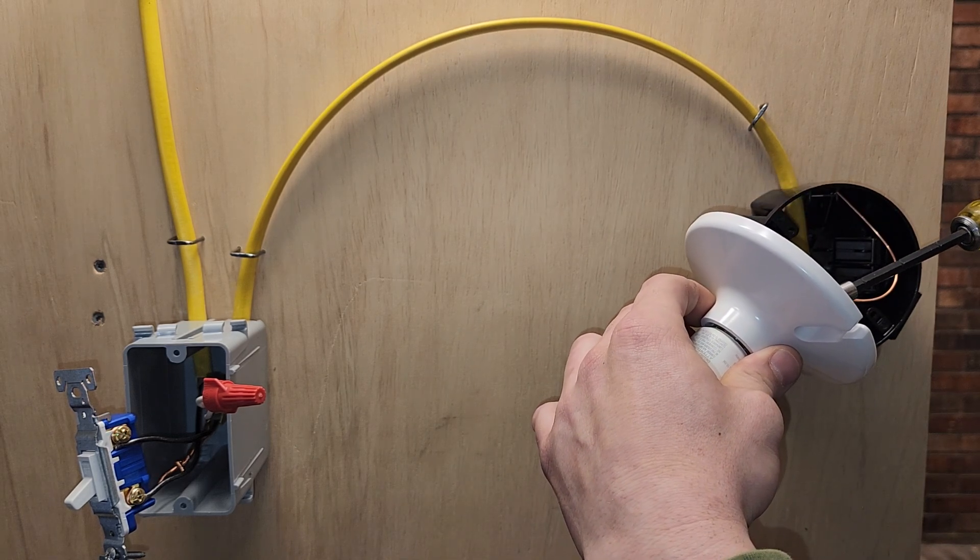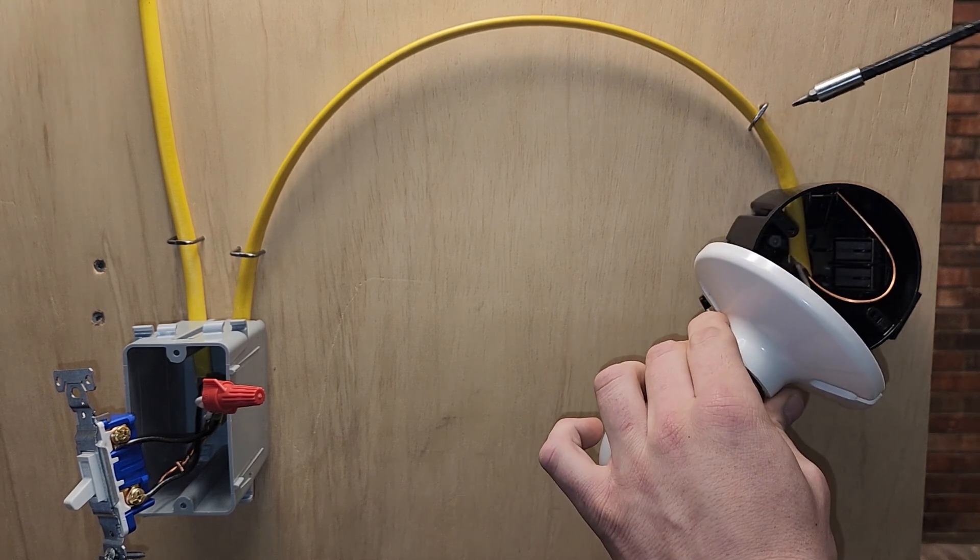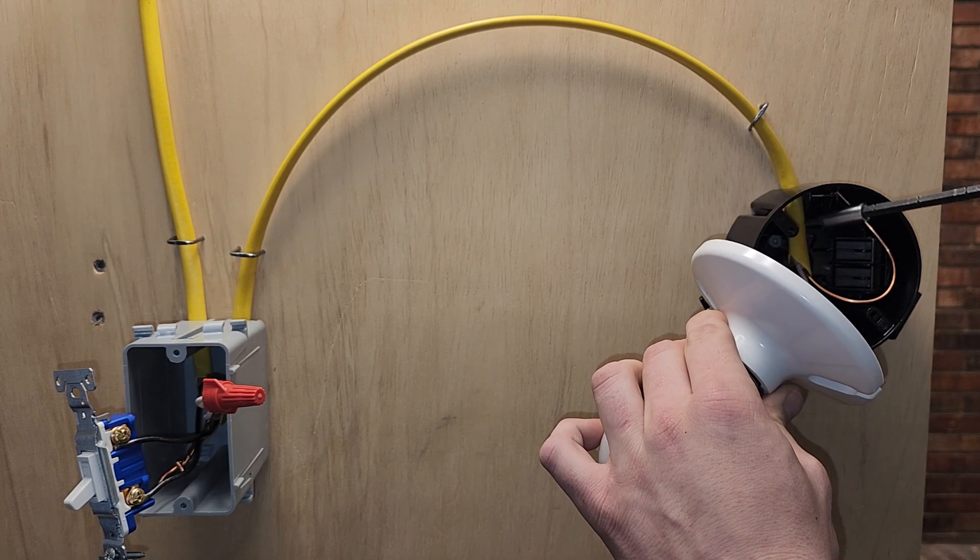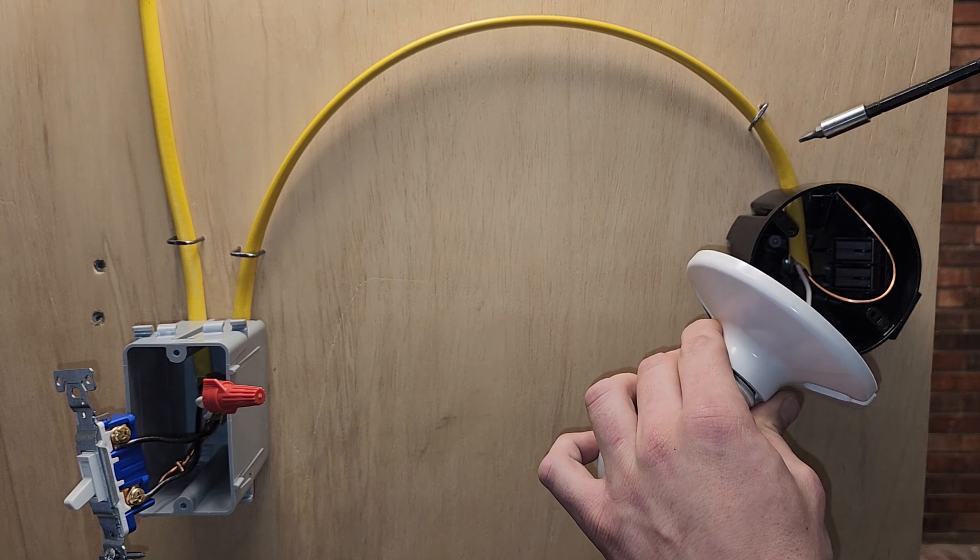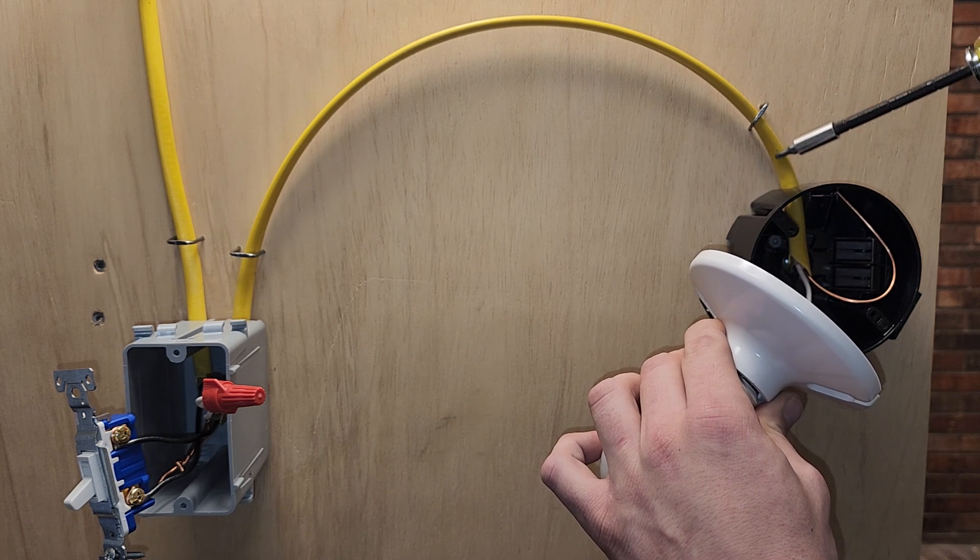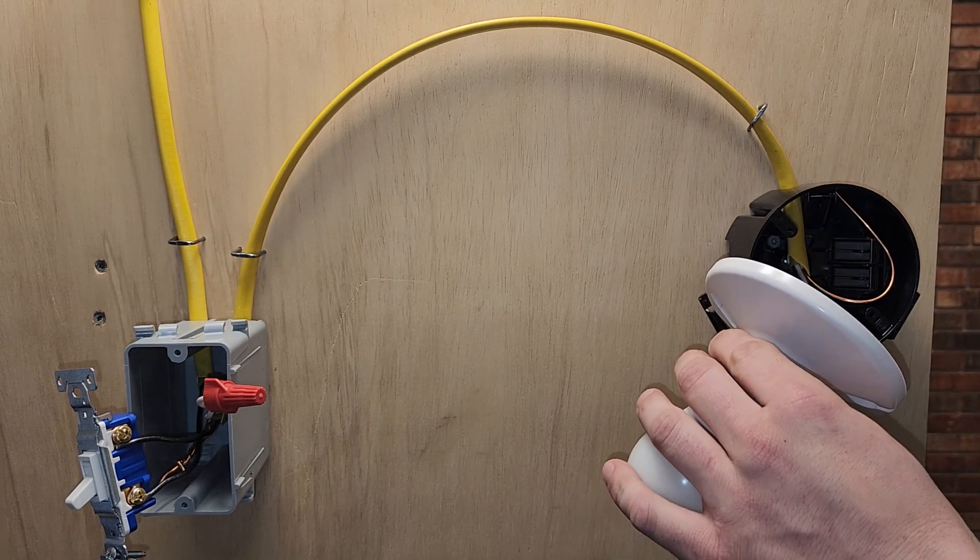Another thing to pay attention to, you can't strip this jacket out. This jacket has to be within a quarter inch inside this box. You can't strip this wire out here and have the black, white, and ground exposed outside this box. It has to be inside of the box at least a quarter of an inch.